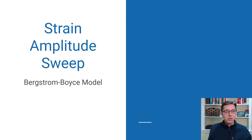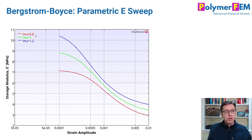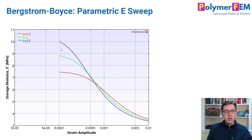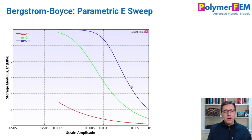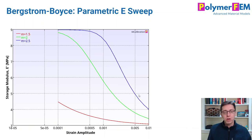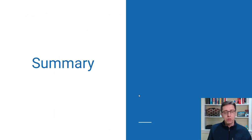For strain amplitude sweeps in the parametric study: mu shifts everything up and down as expected; S shifts the initial value but not the final value; tau_base shifts the curves horizontally; and the M value changes the slope. If M equals 1, this reduces to a linear viscoelastic model — a flat horizontal line — which is not what we want. A higher M value gives a more rapid transition from high to low storage modulus.